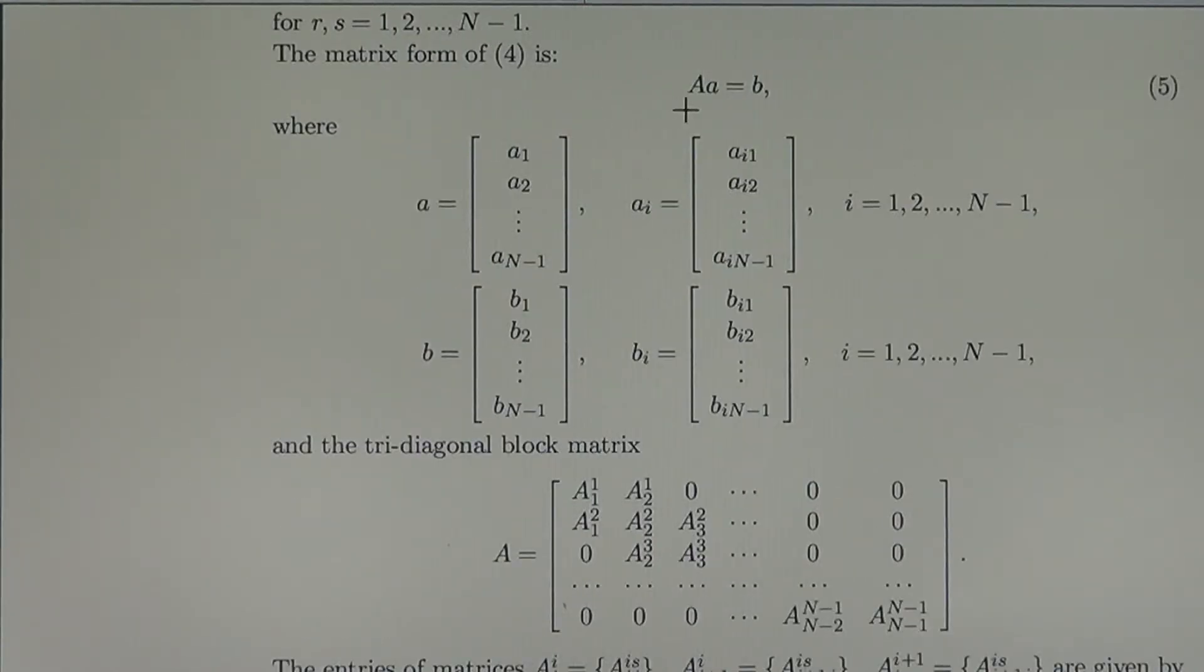Then we can write this equation in matrix form, A times a equals b, where a is the vector with subvectors a i for i equals one, for i equals two, up to i equals N minus one. And the right-hand side is a vector with component subvectors clarified here.